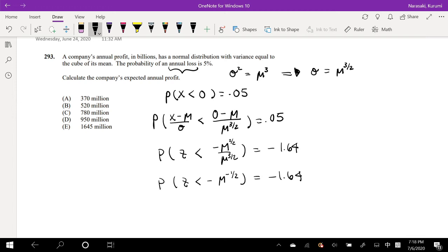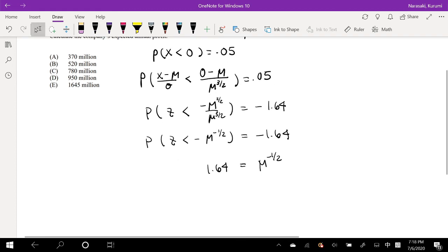So then I'm going to flip the sign, so it's going to be equal to 1.64 equals mu to the negative 1.5. Or I can rewrite it to make it a little bit more clear. This is equal to 1 over mu to the 1.5. So then I'm going to multiply it out. So this is mean to the 1.5 equals 1 over 1.64.